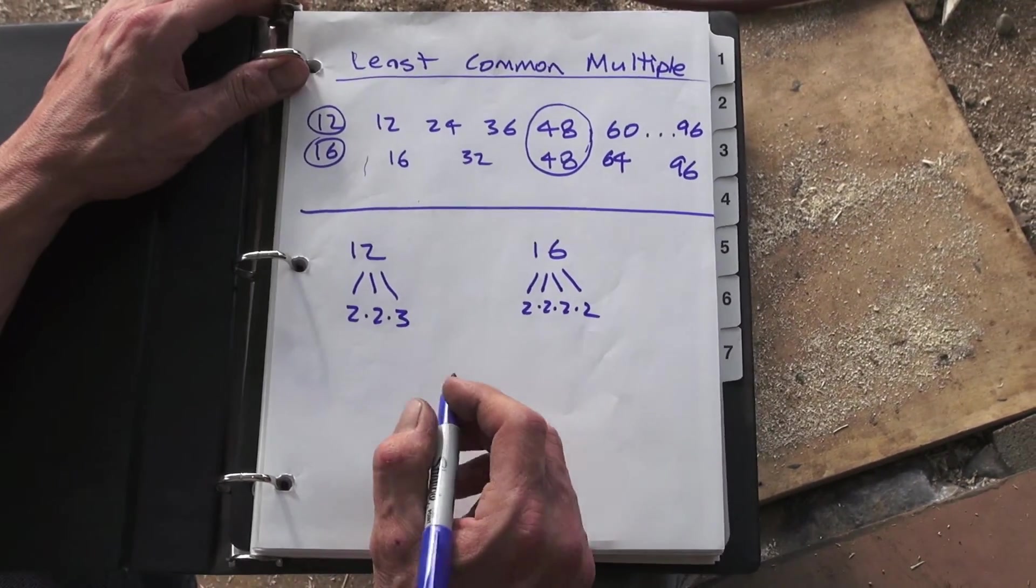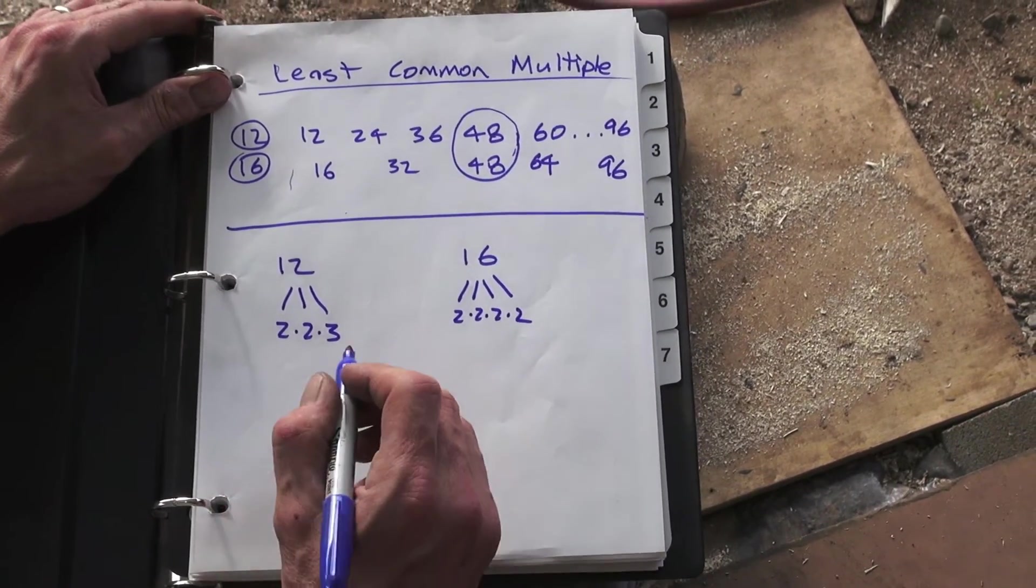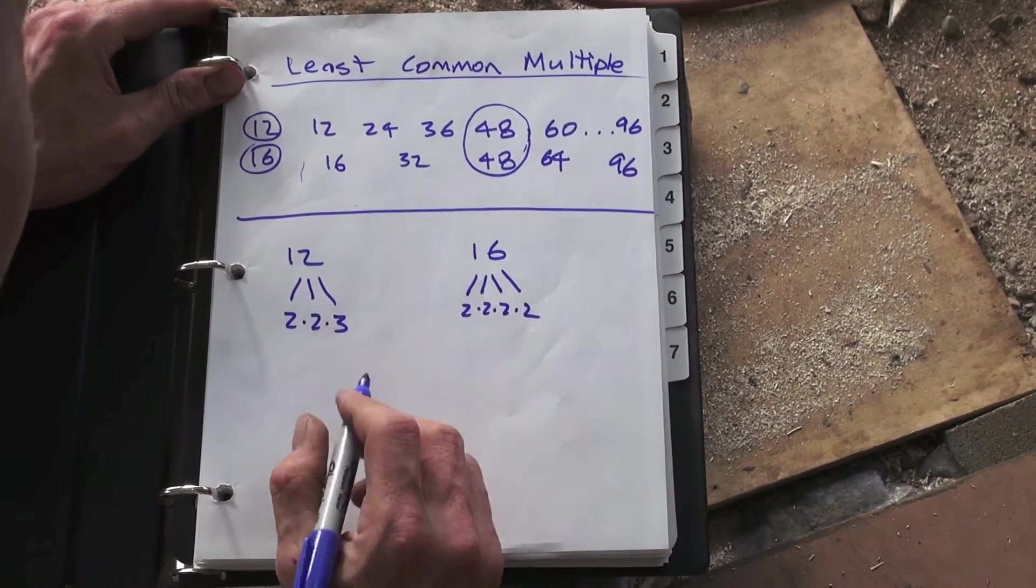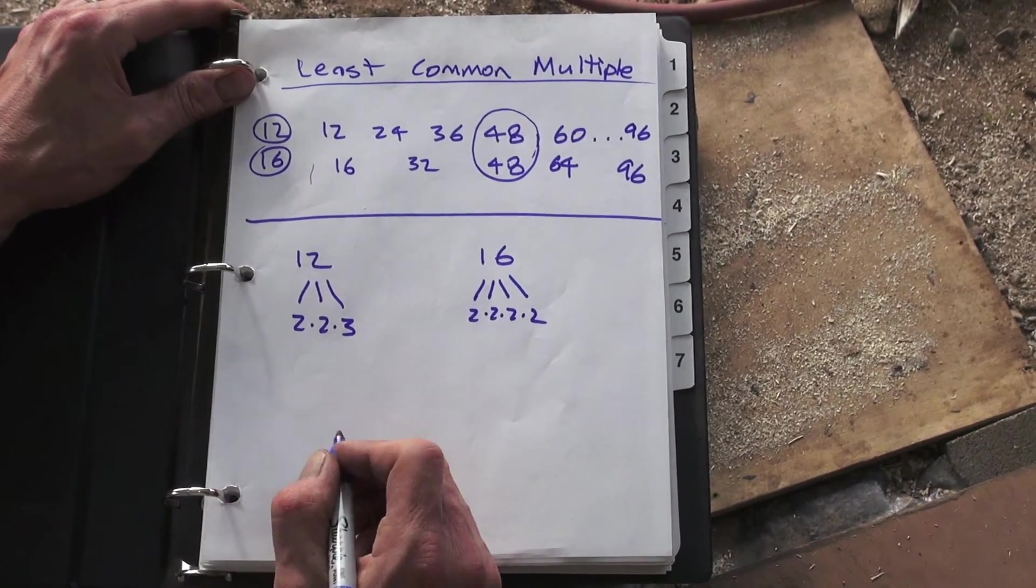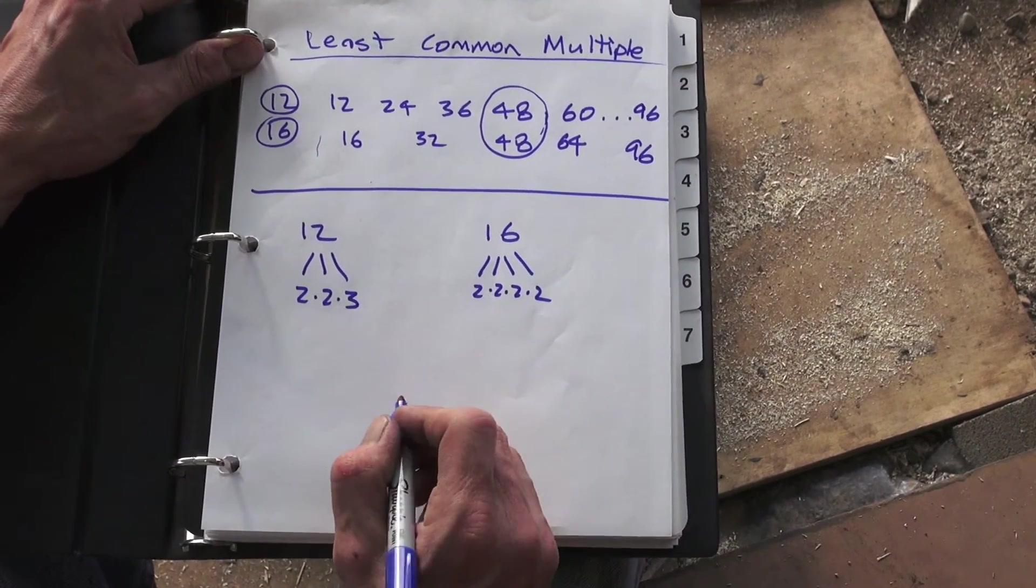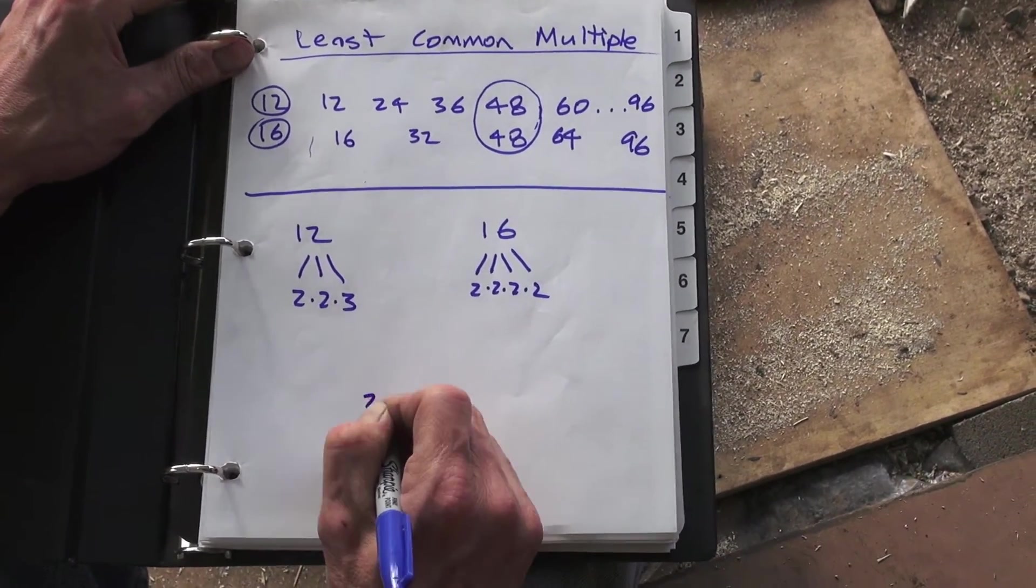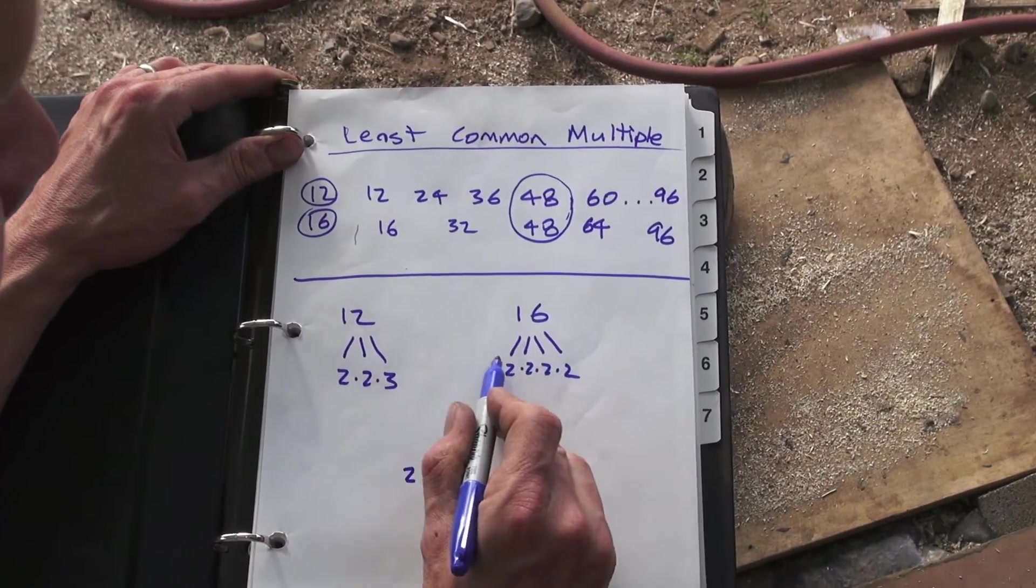If you're trying to find the least common multiple and you know the prime factors, you can look at it as you want it to be a common multiple, so you need the number to have enough factors to cover each one. So it's a multiple of 12, so it's going to have all of these as factors. This common multiple we're talking about, so it's going to have at least two 2s and a 3. But it also is a multiple of this, so it's got to have at least four 2s.